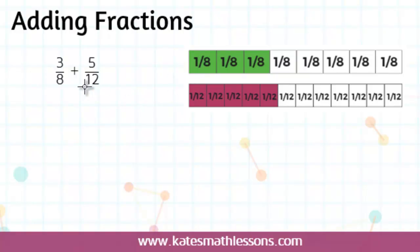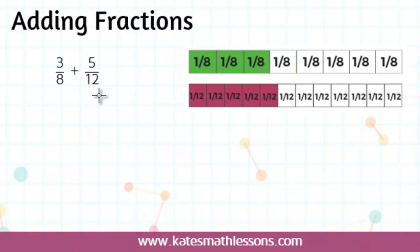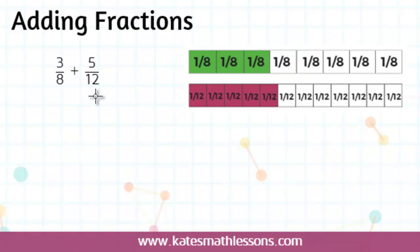When you have fractions with different denominators, you need to first find a common denominator. There are a couple of ways to do that. Some people multiply the two denominators together to get a common denominator, and that works, but a lot of times you get a really large number on the bottom. If you multiply 8 by 12 you get 96, and you can use 96 as a denominator, but you'll have to do some simplifying at the end. So if you find the least common denominator — the smallest number possible — you end up saving yourself some time.